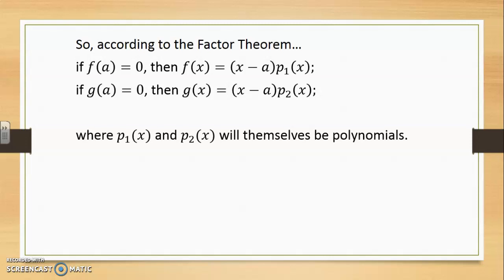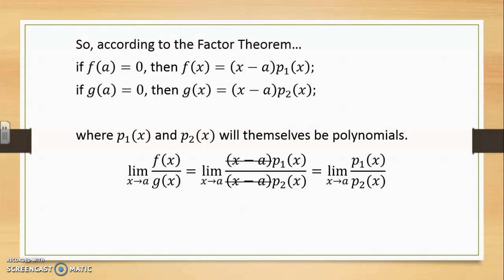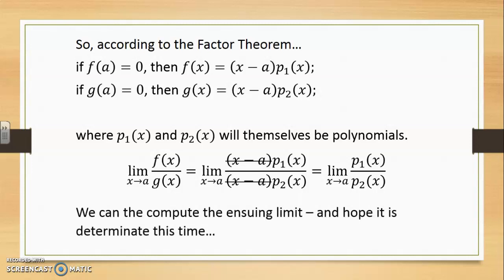So p1 and p2 represent polynomials themselves as f and g did. Therefore the limit as x approaches a of the quotient f over g can be replaced by the limit as x approaches a with the factored forms that we'll get for f and g including the common x minus a's. Cancelling the common x minus a reduces the limit to the quotient of p1 over p2 as we do the limit x going towards a. Then we compute the ensuing limit and hopefully by direct substitution we will get a determinate result this time.